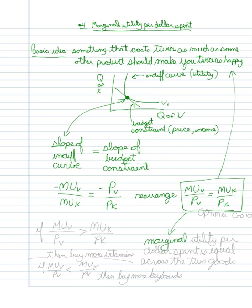That the marginal utility per dollar spent is equal across the two goods. And that's our optimal choice.